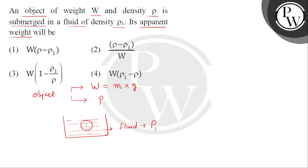Object अपना weight put करता है vertically downward, और इस पर buoyant force लगता है through the fluid. इसको हम show कर सकते हैं FB से. तो ये दोनों forces के effect में object feel करेगा अपना apparent weight. तो apparent weight को हम मान लेते हैं यहाँ पर W_A.